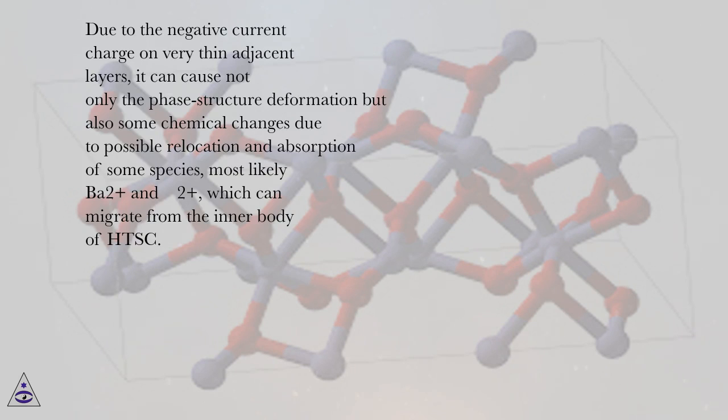Due to the negative current charge on very thin adjacent layers, it can cause not only the phase structure deformation but also some chemical changes due to possible relocation and absorption of some species, most likely Ba2+ and Cu2+, which can migrate from the inner body of HTSC.